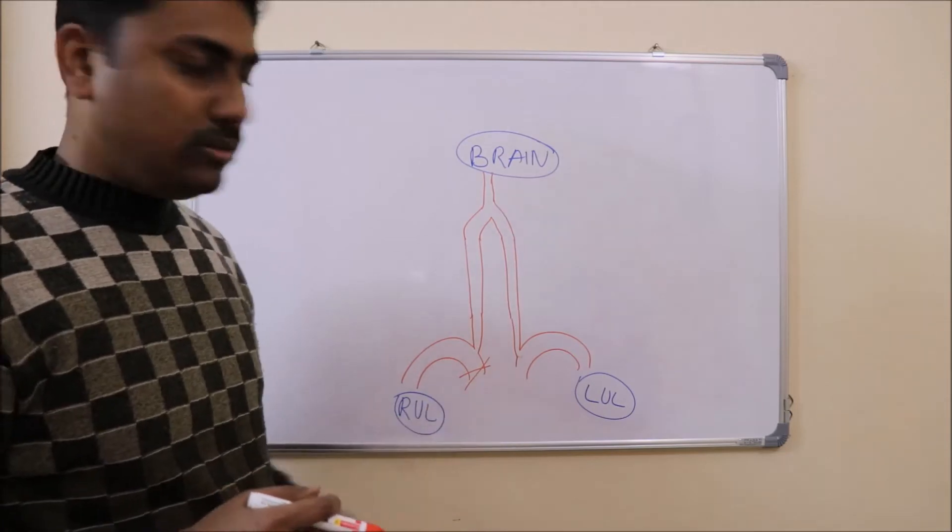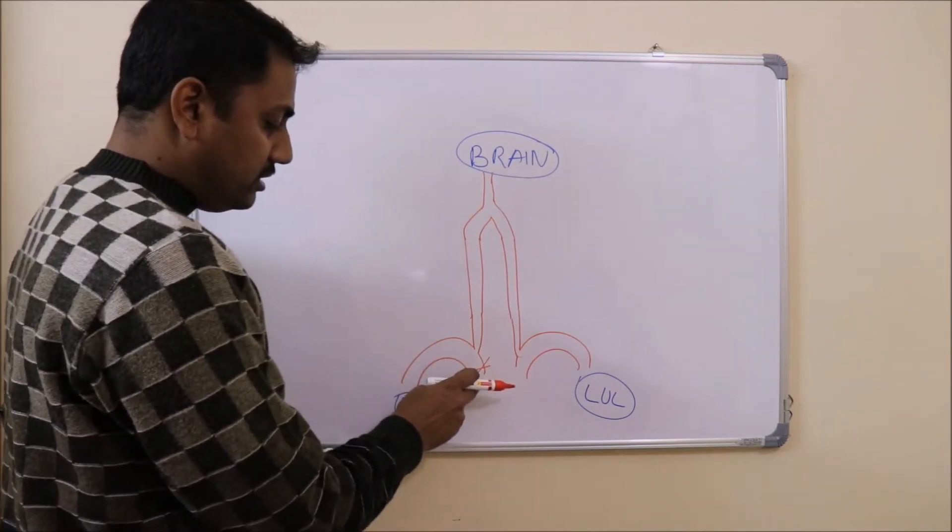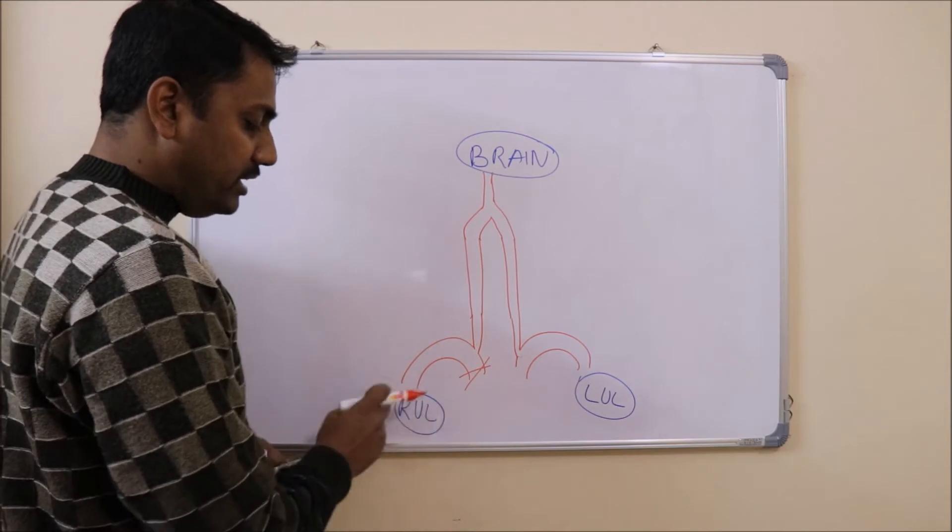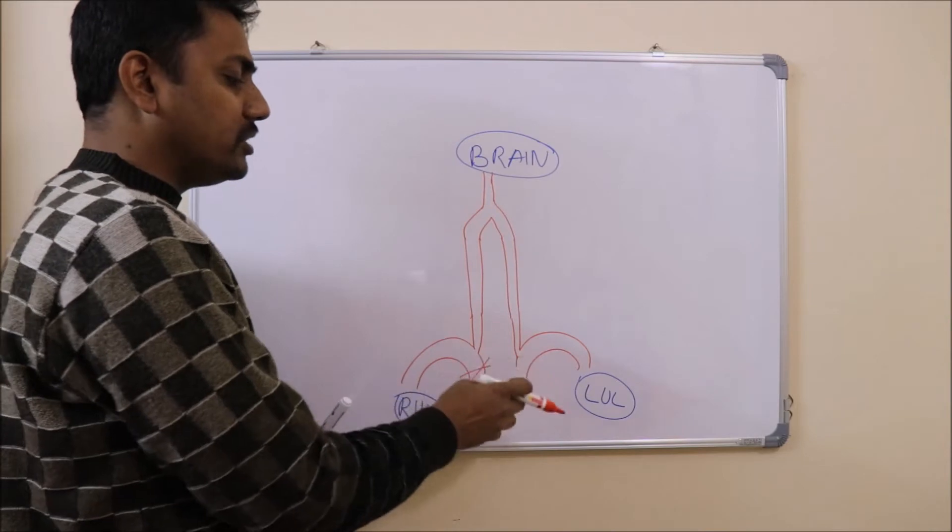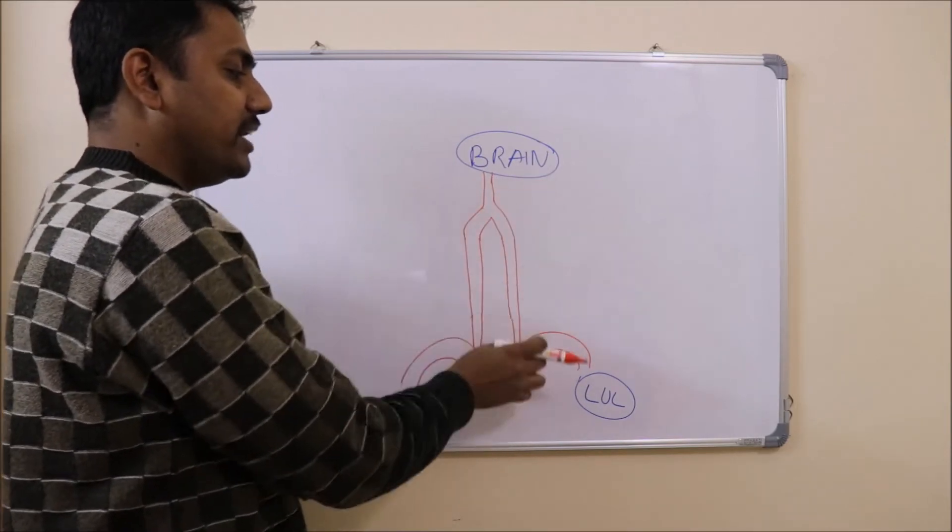So if there is an obstruction there will be loss of blood supply to the right upper limb. Supply to the brain will be okay because there is a collateral circulation from the other side vertebral artery.